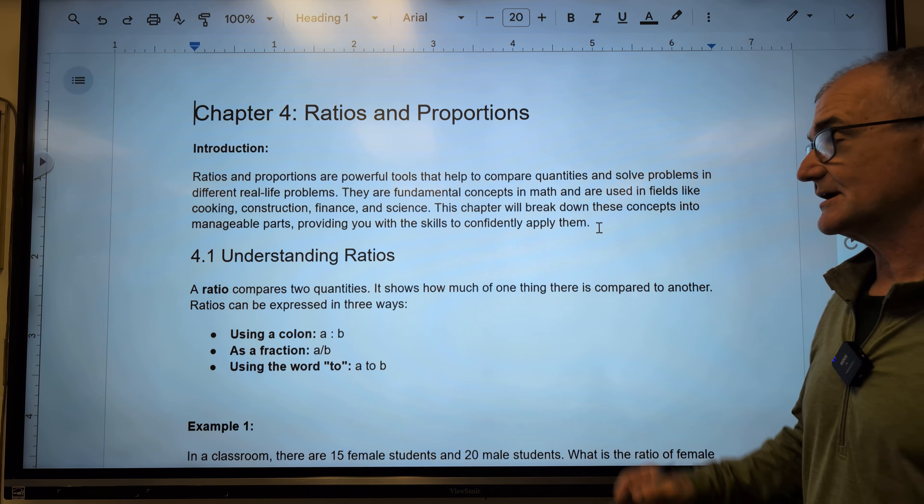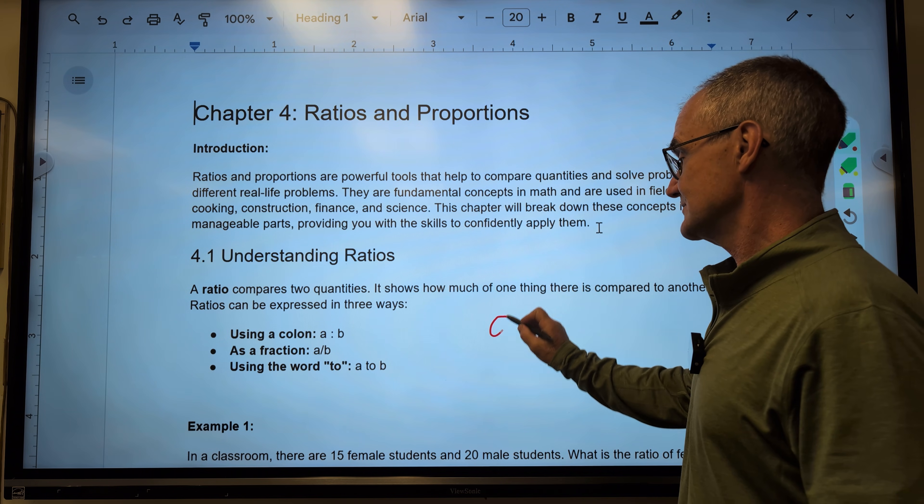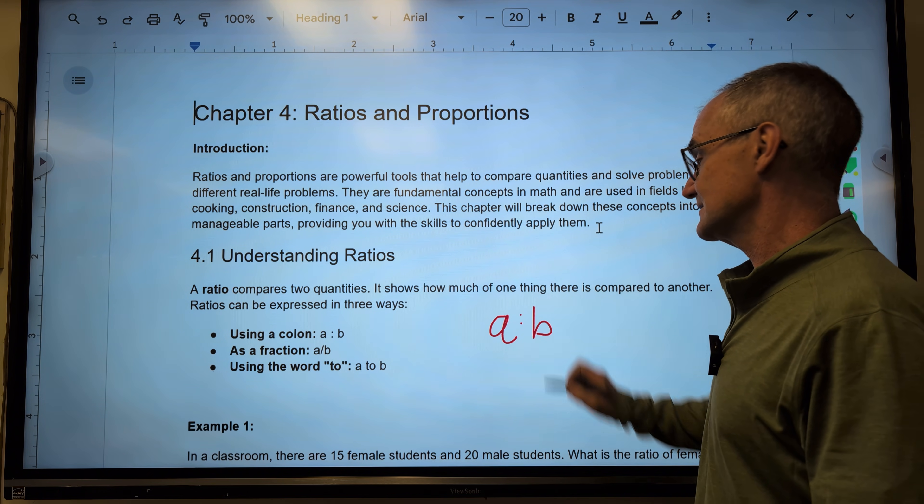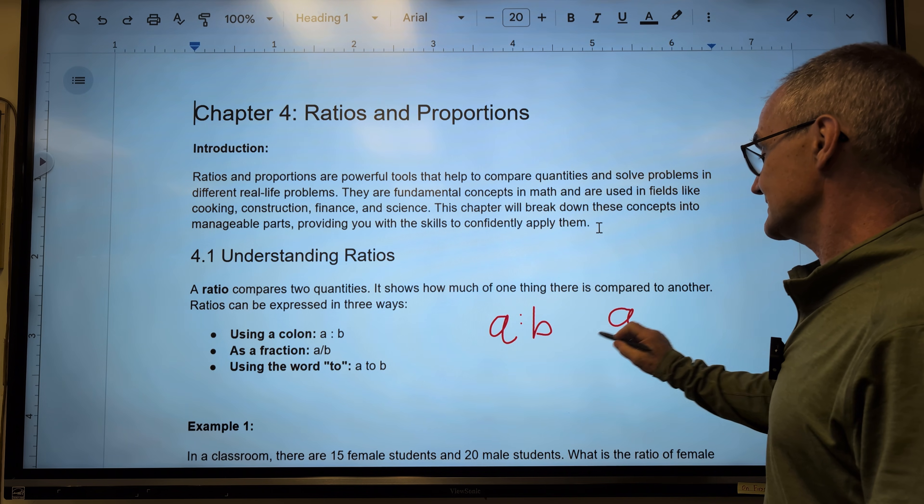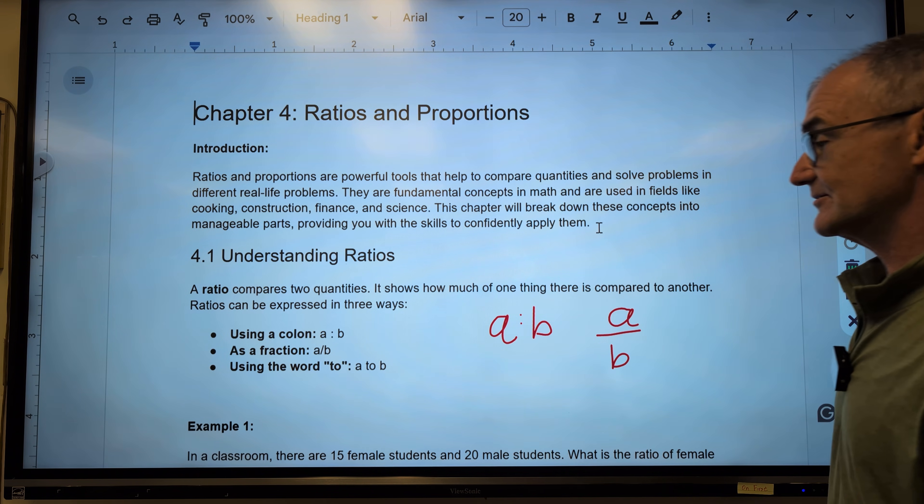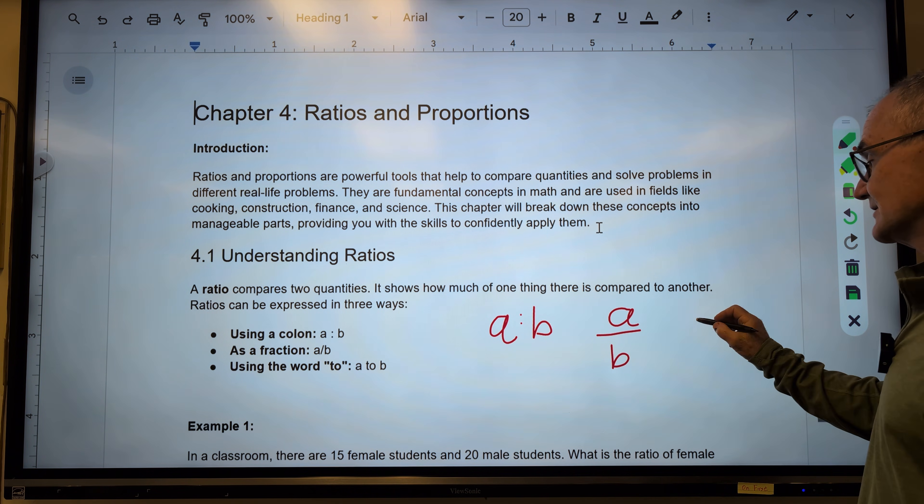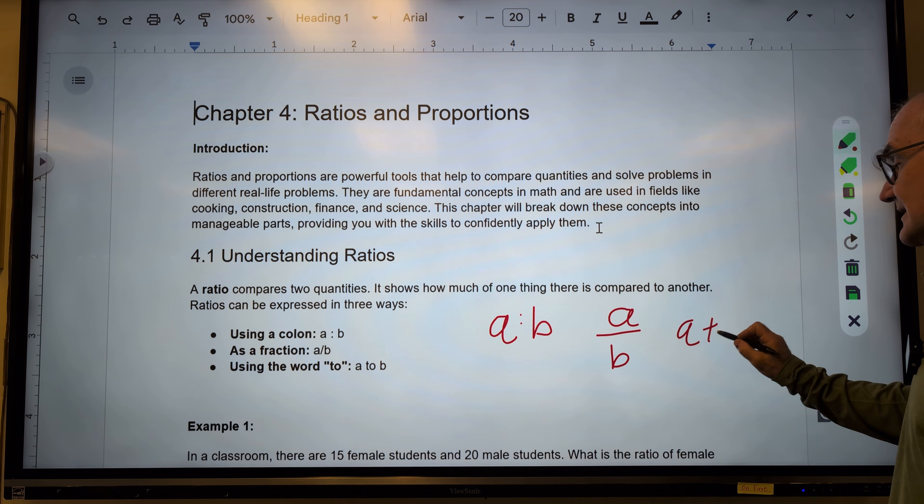There are three ways to write a ratio. The first is a colon. You could say A is to B, or you could write that exact same thing as a fraction, A is to B. And then the third way you could write that ratio is with the word A to B.